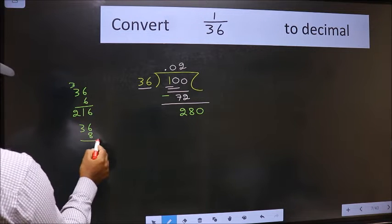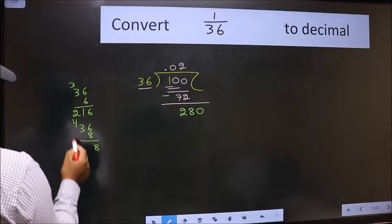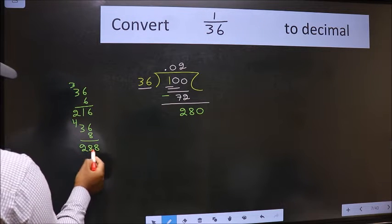So take 8. 8 times 6 is 48, 8 times 3 is 24 plus 4, gives 288. Exceeding.